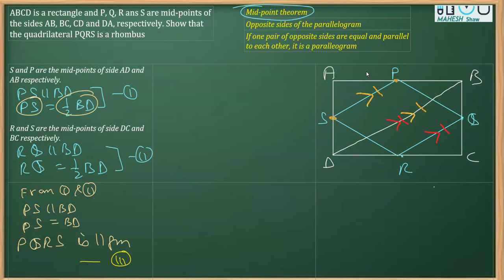The next step is to prove PQRS is a rhombus. To prove any parallelogram is a rhombus, we prove that one pair of adjacent sides is equal. So I am going to prove SP is equal to RQ. A parallelogram whose adjacent sides are equal is a rhombus.